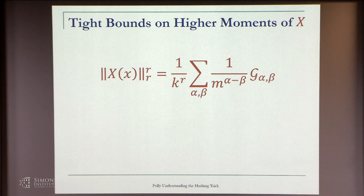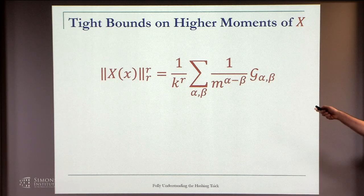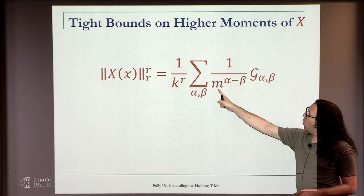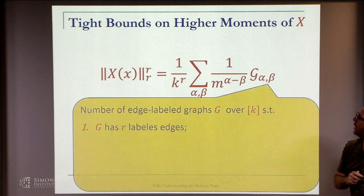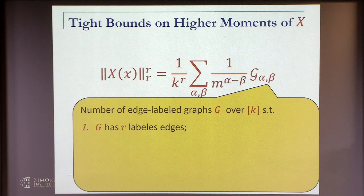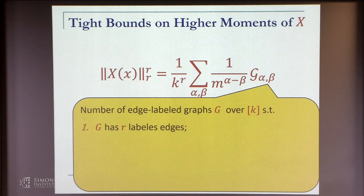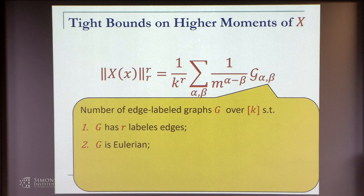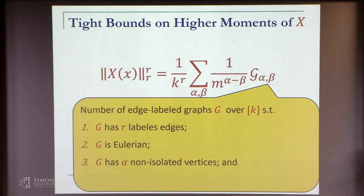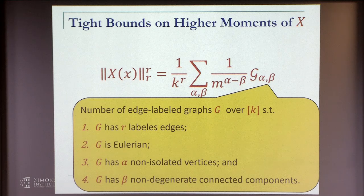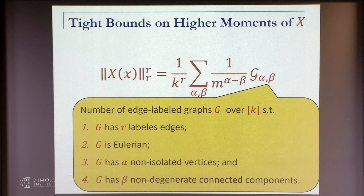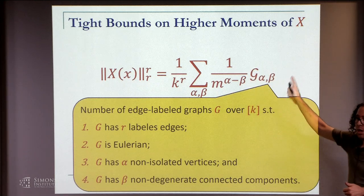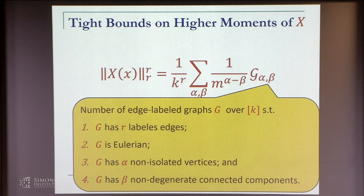It's better to think about it like this. A single node contributes one here and one here. We can ignore this and get that the expected value is 1 over m to the power of (number of non-isolated vertices minus number of non-degenerate connected components). This means I don't count isolated vertices here. Going back to the higher order moment, we sum over all possible alpha and beta, 1 over m to the alpha minus beta, where g_{alpha,beta} is the number of graphs that satisfy what we discussed.